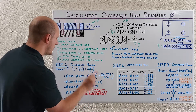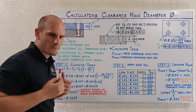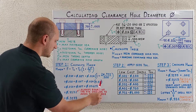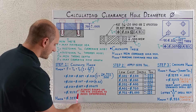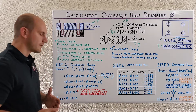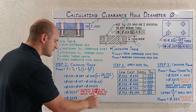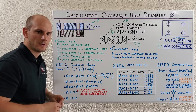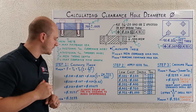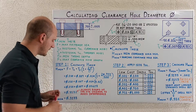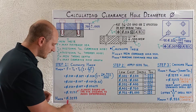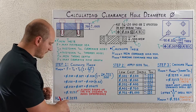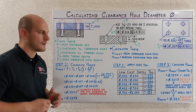You can follow along with your calculator through the math. I always round the fourth decimal place up to the next value to ensure interference-free assembly. Taking this value and rounding up, we get a final minimum clearance hole diameter of 0.3133.